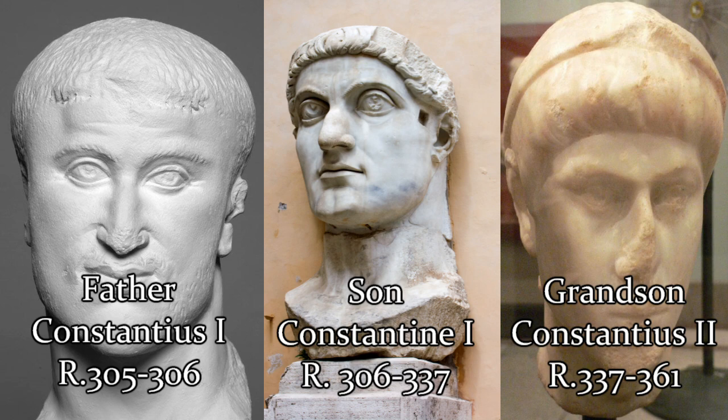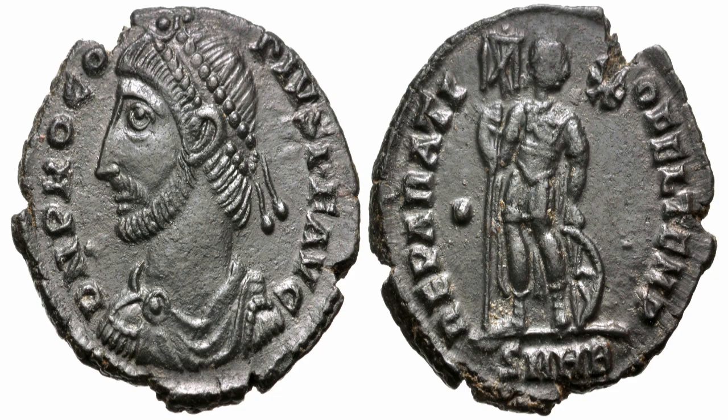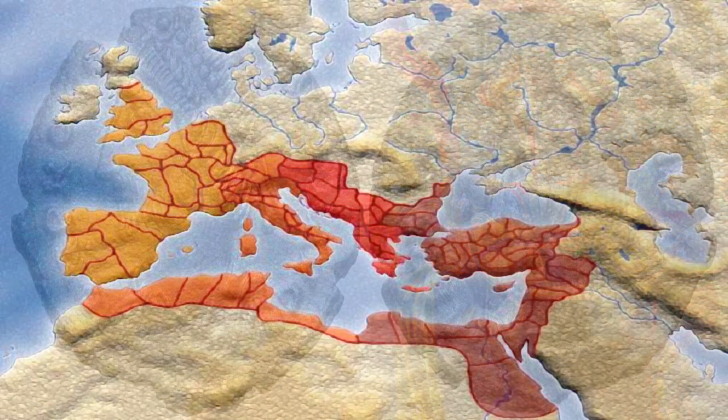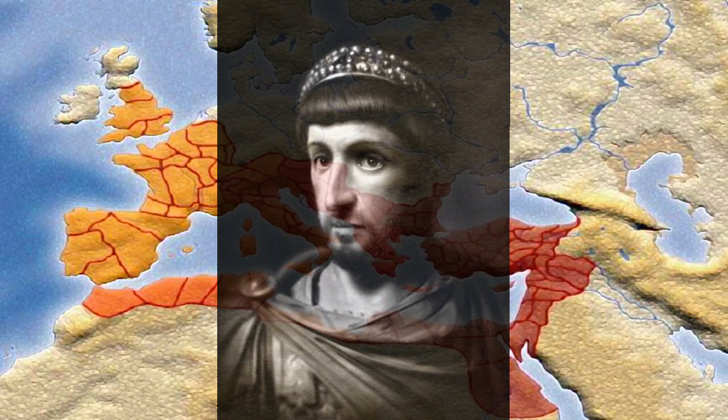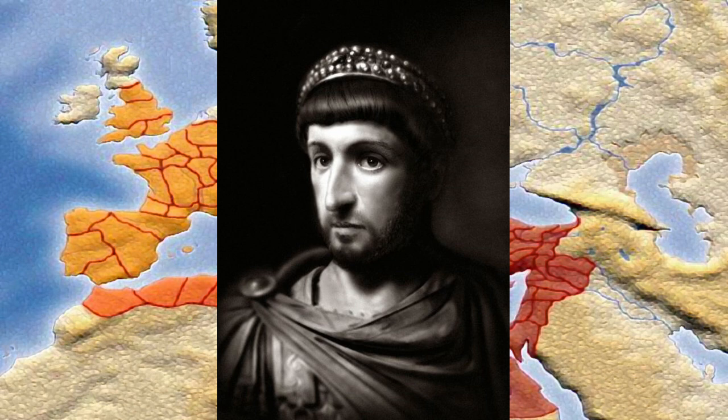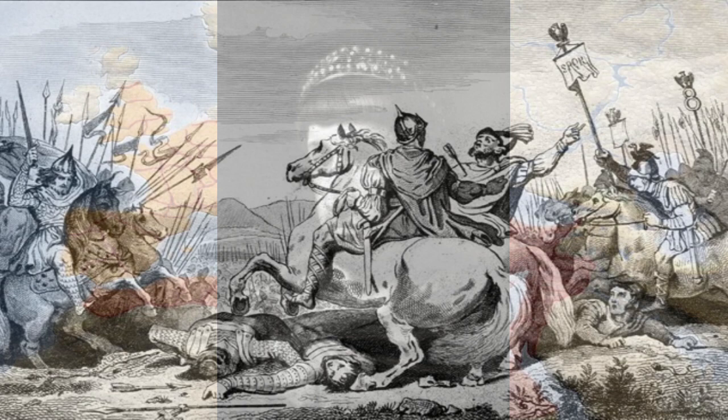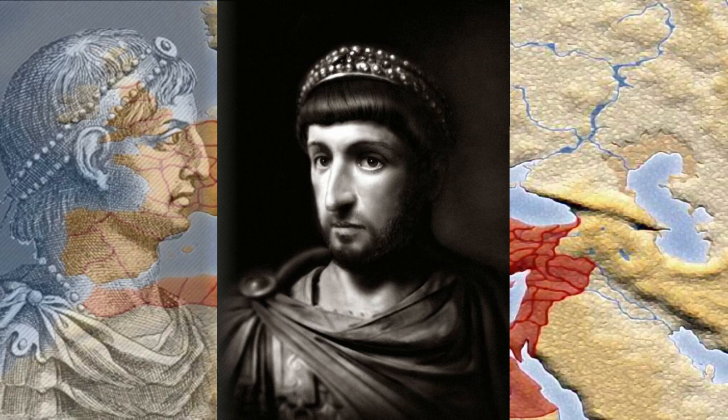The usurper Procopius was able to get legions to defect to him because he was related to the Constantinian family. The longest reigning emperor of the Roman Empire from antiquity was not a statesman like Augustus or a soldier like Constantine, but Theodosius II, who became emperor when he was seven years old and reigned alone for 42 years. He never experienced a revolt and had to fend off Attila the Hun. His being a descendant of Theodosius the Great, though not the sole reason, helped deter others from seizing power from him.